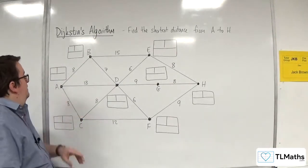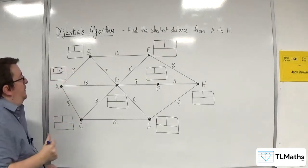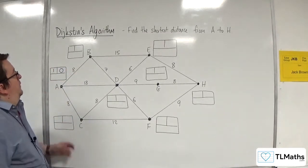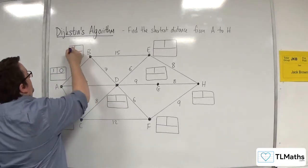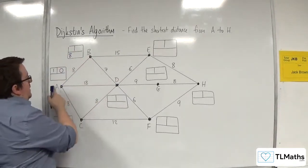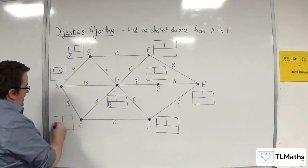So we're going to start off with A, so that gets labeled as 1 and the final value as 0. So then we look at the routes coming out of A, so we've got to B is 8, so that goes in the working value there. To D is 18, and to C is 8.